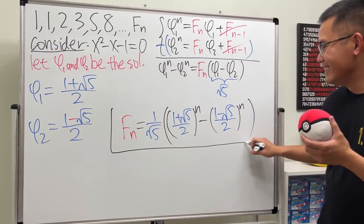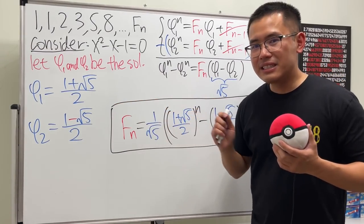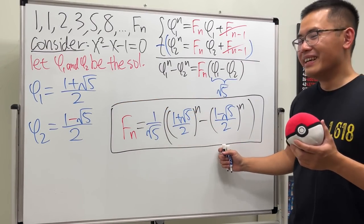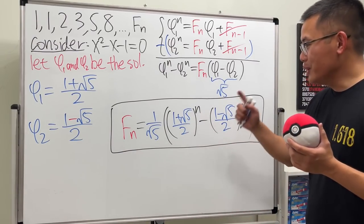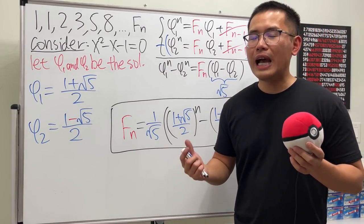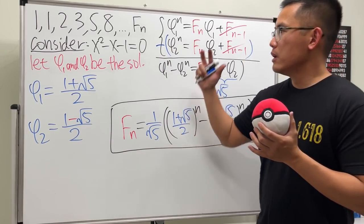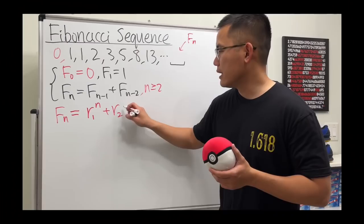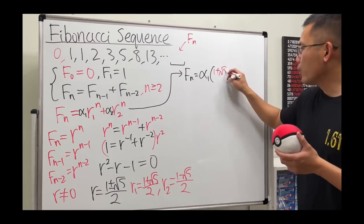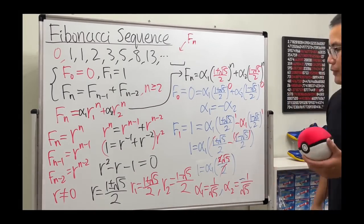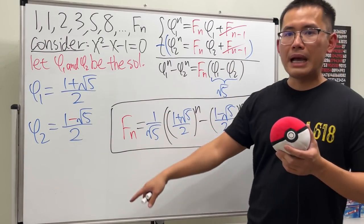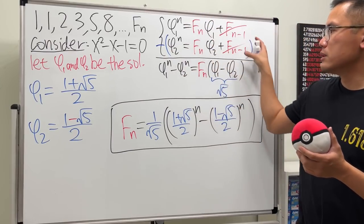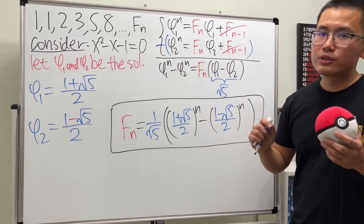This right here is indeed the explicit formula for the nth term of the Fibonacci sequence. It's super, super cool, because usually, I will show you guys how to solve the formula by using the difference equation, but that's a little bit technical because you might have to take a discrete map in order to encounter that situation. But for this, we saw the pattern earlier, and then we're able to come with this, and then it worked out so nicely.